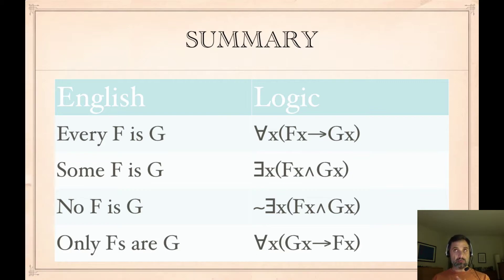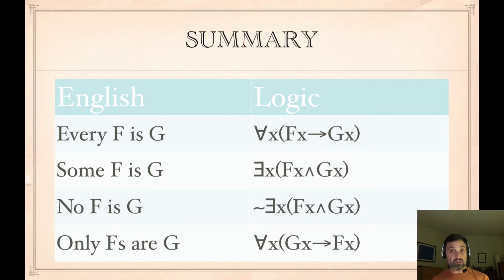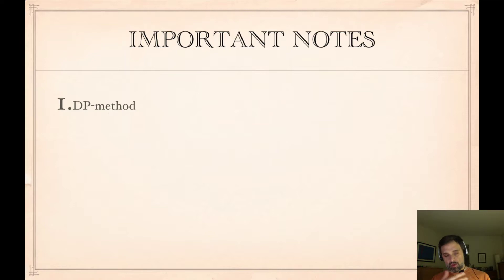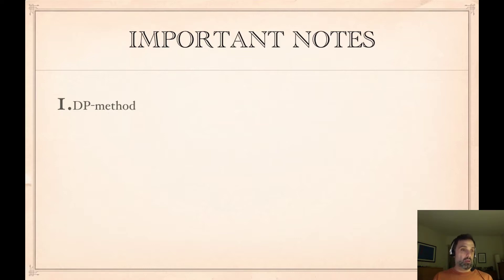We looked at alternate symbolizations of 'no F is G' and 'only F's are G.' Pick whichever you find most intuitive and stick with it. I'll be using these because students tend to make fewer mistakes with them, but it's up to you. Remember the determiner phrase / verb phrase method: find the determiner phrase, find the verb phrase, chop them up. That lets you symbolize the quantity word, giving you a quantifier, a connective, and maybe a negation. If it's 'every,' the noun phrase goes in the antecedent; if it's 'only,' it goes in the consequent. The verb phrase goes in the consequent for 'every,' the antecedent for 'only,' and placement doesn't matter for 'no' or 'some' using the existential.